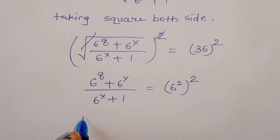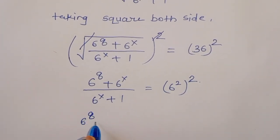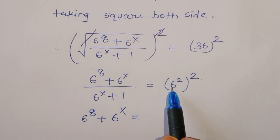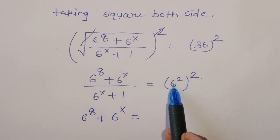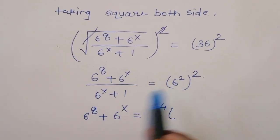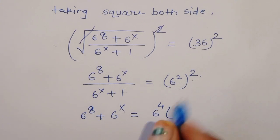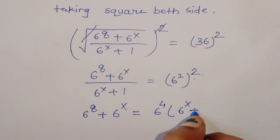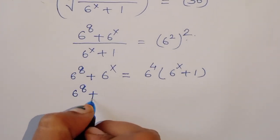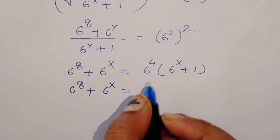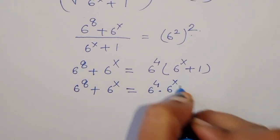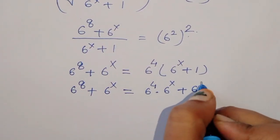Now we can write: 6 raised to 8 plus 6 raised to x is equal to 6 raised to 4. When we multiply this across, it becomes 6 raised to 4 times 6 raised to x plus 1, which expands to 6 raised to 4 times 6 raised to x plus 6 raised to 4.